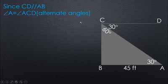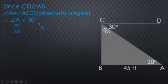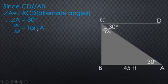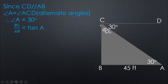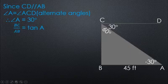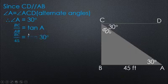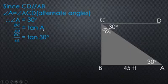Alternate angles — that's what we call it. BC is the height, and the other angle is 30 degrees.